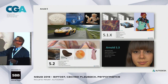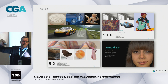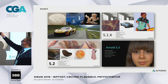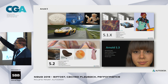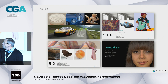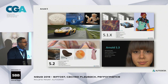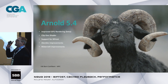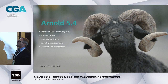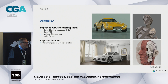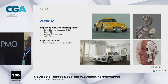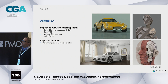A few words about Arnold. Coming from Arnold 5 with the new standard surface shader, in 5.1 we got the toon shader and the denoiser — both OptiX and software denoising. In 5.2 we got the new sheen layer, giving a subtle highlight on surfaces. In 5.3 the most prominent feature is GPU rendering, still in beta. Now in Arnold 5.4 we have improved GPU rendering, a clip geo shader, and support for Open Shading Language and OpenVDB.